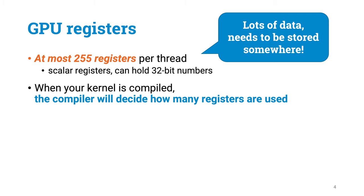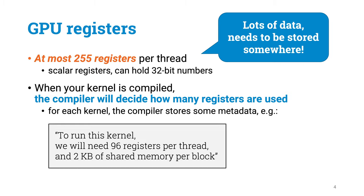When you compile your kernel, NVCC will see how many registers you need — at most 255 — and also how much shared memory you need, and this information will be stored together with your kernel. So your kernel will contain information such as: to run this kernel, we will need 96 registers per thread and 2 kilobytes of shared memory per block.